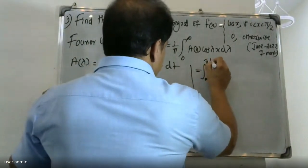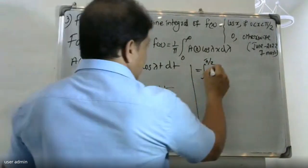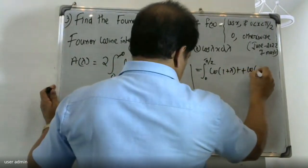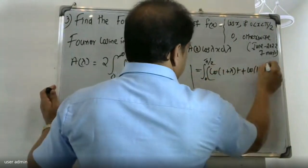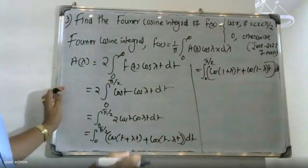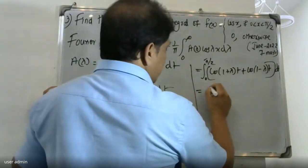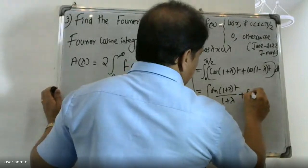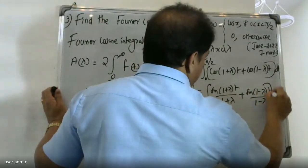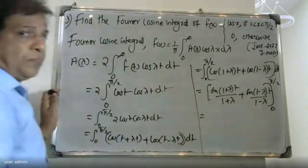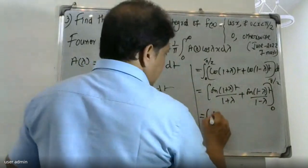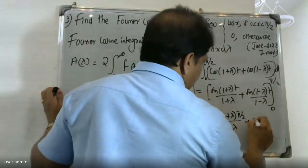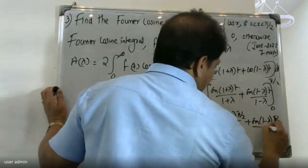The integral from 0 to π/2 of [cos((1+λ)t) + cos((1-λ)t)] dt evaluates to: [sin((1+λ)t)/(1+λ) + sin((1-λ)t)/(1-λ)] from 0 to π/2.